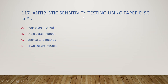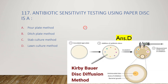Next question: antibiotic sensitivity testing using paper disc is a pour plate method, ditch plate method, stab culture method, or lawn culture method? The right answer is option D, lawn culture method. This is the Kirby-Bauer disc diffusion method. The plate — such as Muller-Hinton media — is inoculated and antibiotic discs of different types are added. After incubation, the zone of inhibition of each antibiotic is measured to test sensitivity.